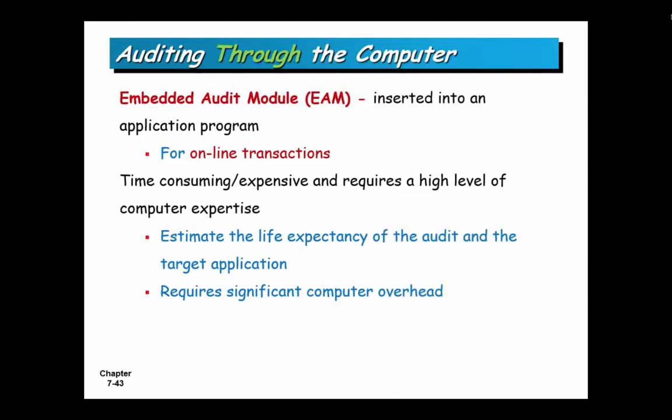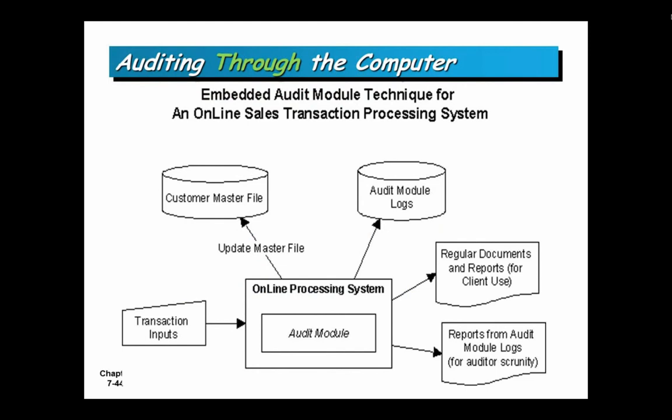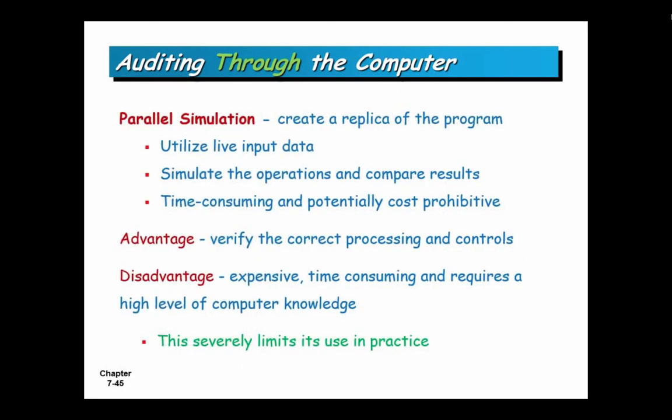Embedded audit module: you have your real-time online system, and there's a little sub-module in there that's monitoring what's going on — that's your audit module. It reports out what it sees. As real transactions are occurring, that audit module sits inside of your production environment, so instead of having a separate company or department set up, it actually just monitors the real transactions. It's limited in its use because it's expensive, and equally, that little audit module slows down every online transaction — and you really don't want your online world slowed down in that fashion.